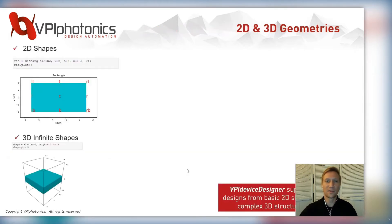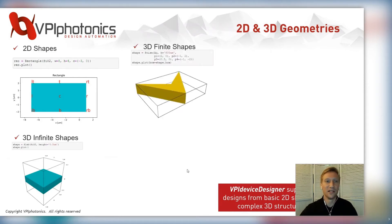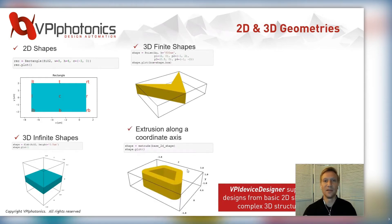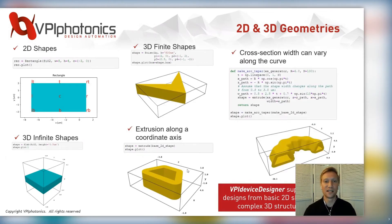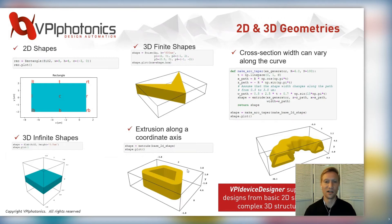Because we're using Python, when it comes to the geometries we can define, the possibilities are really limitless. We can define 2D shapes, 3D shapes — they can be finite or infinite — and we can also do various techniques like extruding along a coordinate axis. We can also make very complicated geometries. You can see an example on the right of a cross-section width that varies along a curve. So you can make your simulation as simple or as complicated as you'd like for your device geometry.